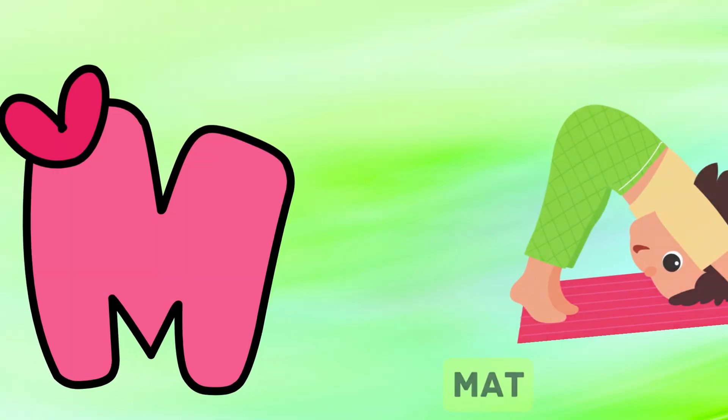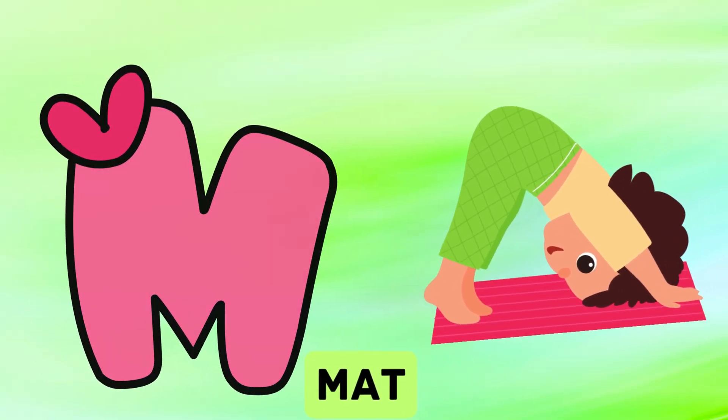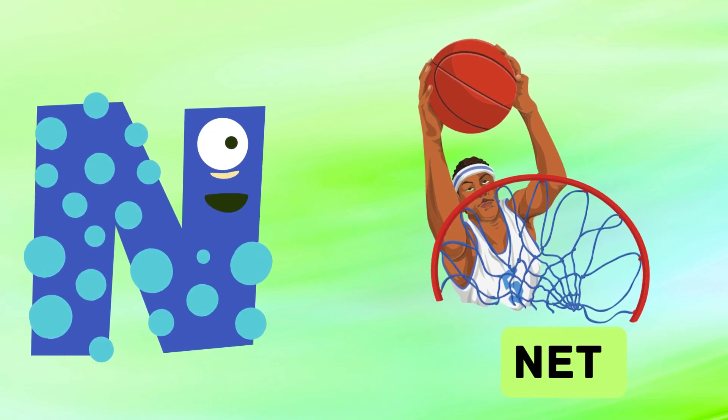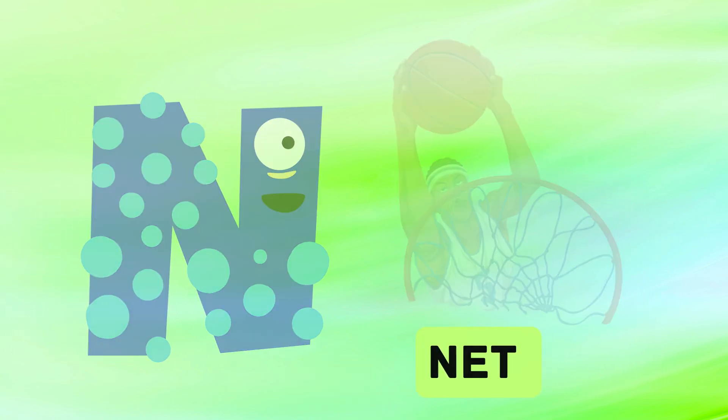M is for mat, m-m-mat. N is for net, n-n-net.